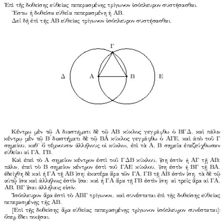The most influential mathematician of the 18th century was arguably Leonhard Euler. His contributions range from founding the study of graph theory with the seven bridges of Konigsberg problem to standardizing many modern mathematical terms and notations. For example, he named the square root of minus 1 with the symbol i, and he popularized the use of the Greek letter π to stand for the ratio of a circle's circumference to its diameter.